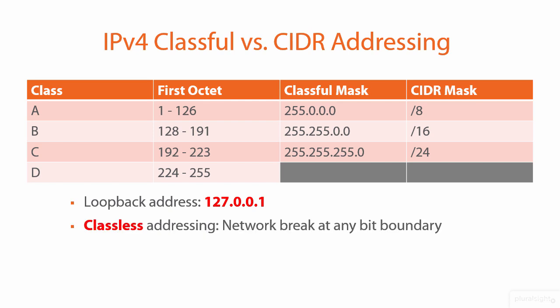Whereas classful addressing is divided into A, B, C, D, etc., with networks divided at octet bit boundaries — first octet, second octet, third octet — you can actually do CIDR, or classless interdomain routing, to break a network at any bit boundary. This is useful when you create subnets, starting with a large pool of addresses and subdividing it into separate smaller networks to partition your network for performance and security reasons.